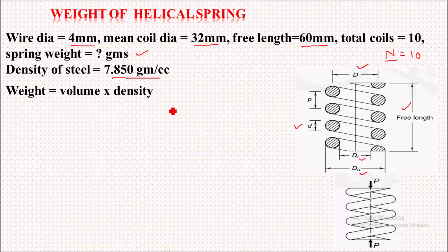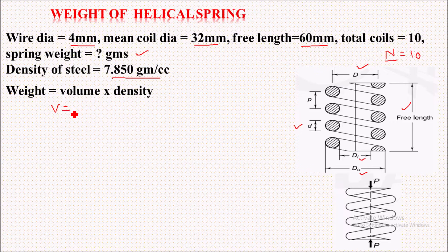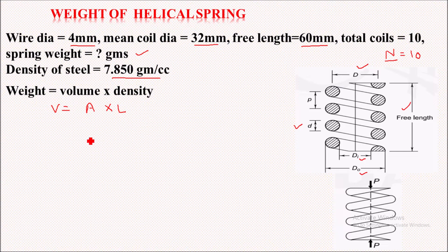We have the formula to calculate weight, that is volume into density. So I can write volume as area into length, where area is nothing but the cross-sectional area of the spring.